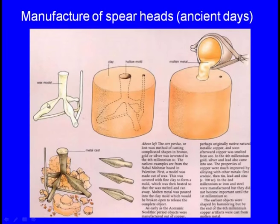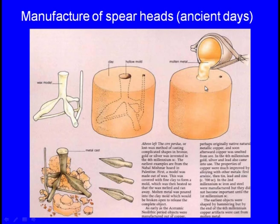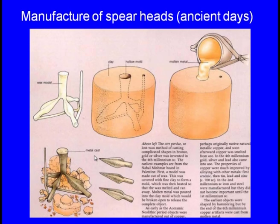How did the ancient man make spear heads? Initially he made a wax model of the spear heads. Then he made an assembly and took sticking sand and compacted it around this wax model. He melted the metal and the molten metal was poured into the system. Before pouring, he drained out the wax, leaving a hollow cavity. After the molten metal solidified, he broke the molding sand and obtained the individual spear heads.